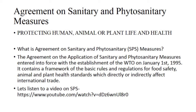The agreement contains basic rules and regulations for food safety, and animal and plant health standards, which directly or indirectly affect international trade. There are three international bodies that deal with standards and measures. If any member country wishes to come up with internal rules to protect human life, animal or plant health, they have to follow the standards set by these three international bodies. One example is codex, which deals with labeling of items — they must follow the rules of that international organization.